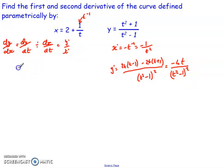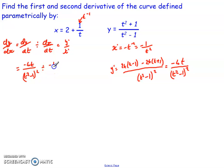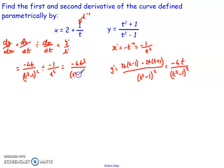To get my full derivative, I do y-dashed divided by x-dashed. So in this case, I do negative 4t over (t squared minus 1) all squared, divided by negative 1 over t squared. The negatives cancel, and to divide by a fraction we turn it into a multiply and flip it, so it's equivalent to times t squared. I then end up getting negative 4t cubed over (t squared minus 1) all squared — so there's my first derivative, dy/dx.